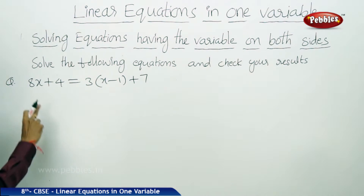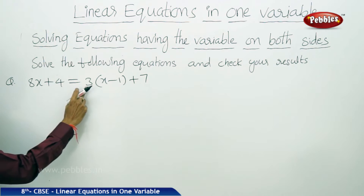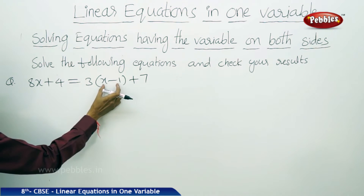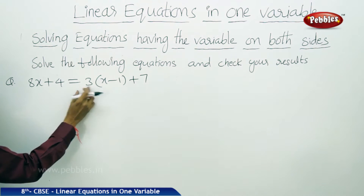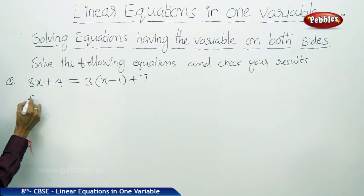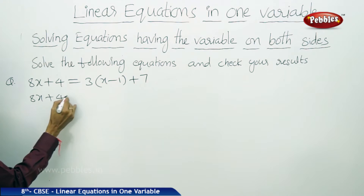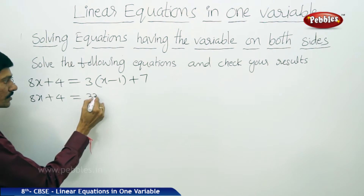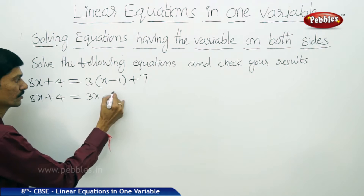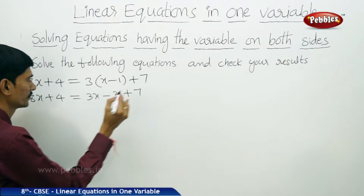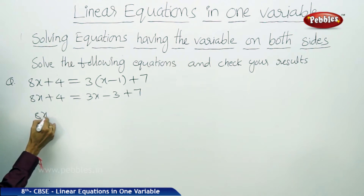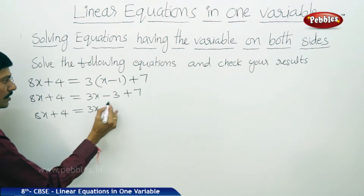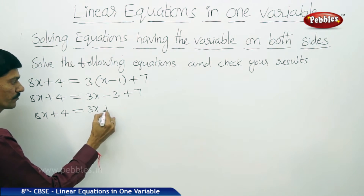The next linear equation is 8x plus 4 equals to 3 of x minus 1 plus 7. In RHS, x minus 1 is multiplied by 3. So we expand: 8x plus 4 equals to 3 into x minus 3 ones are 3, plus 7. This gives 8x plus 4 equals to 3x minus 3 plus 7, which is 3x plus 4.